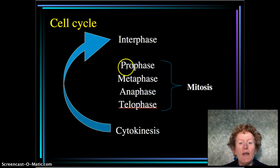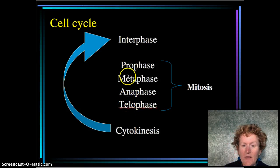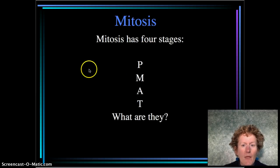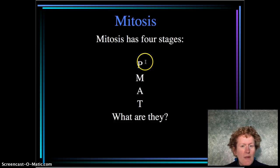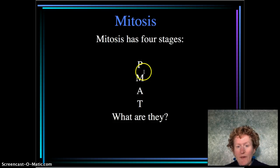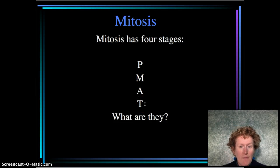You can think of it as PMAT: prophase, metaphase, anaphase, and telophase. P is for prophase, M is for metaphase, A is for anaphase, and T is for telophase — PMAT.